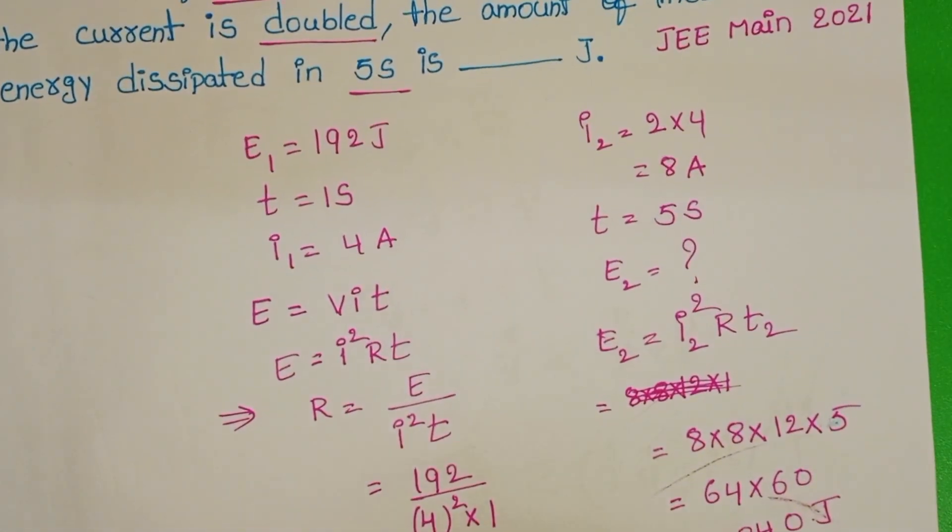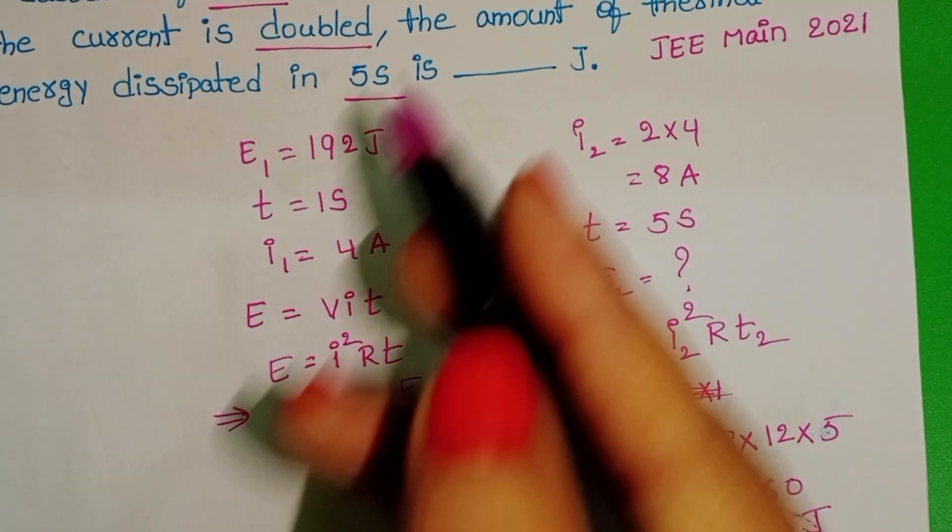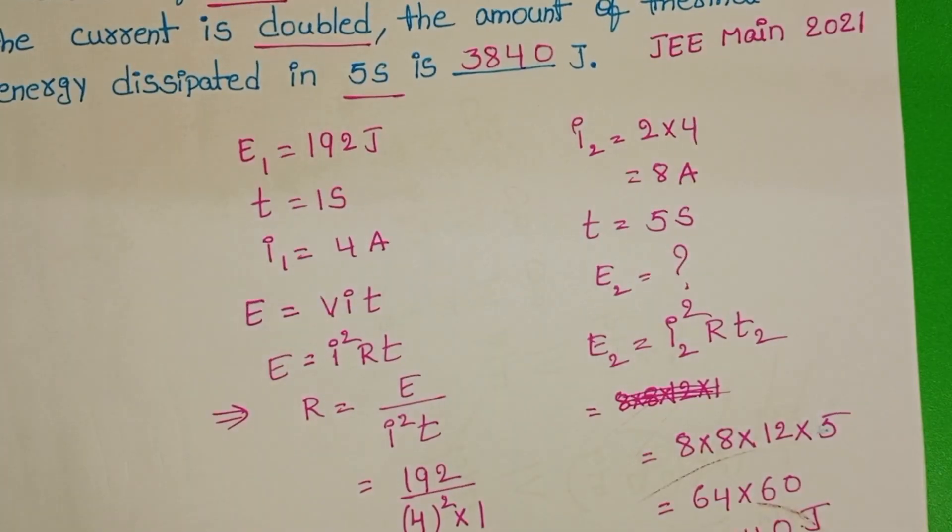When current is doubled, the amount of thermal energy dissipated in 5 seconds is 3840 joules.